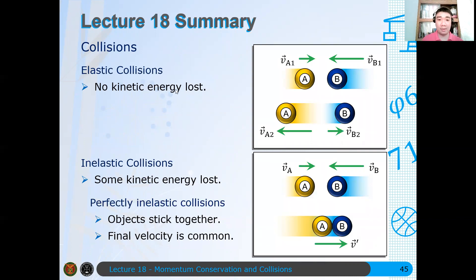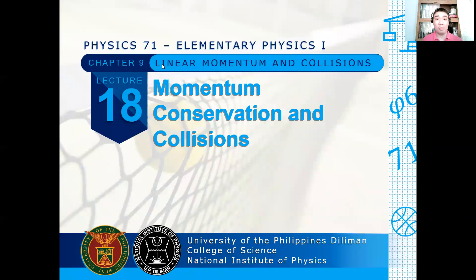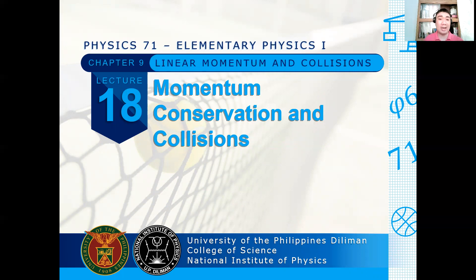Next time, what we will be doing is to extend our discussion on 2D collisions. We will show that — as was the question raised earlier — why there is no partially inelastic collision in 1D: it is impossible in 1D because you need a relationship between the velocities to have a partially inelastic collision. However, in 2D collisions, it is possible to solve for partially inelastic collisions. We will show that next time.